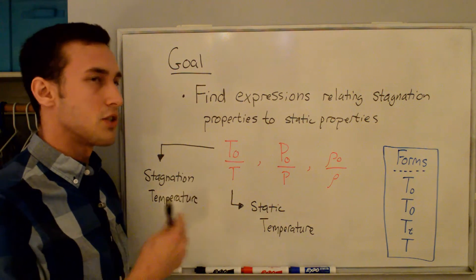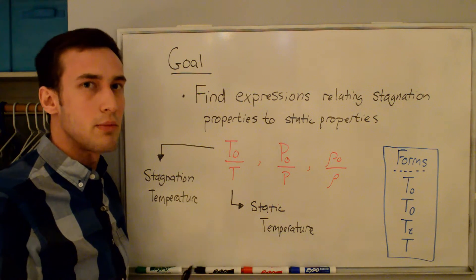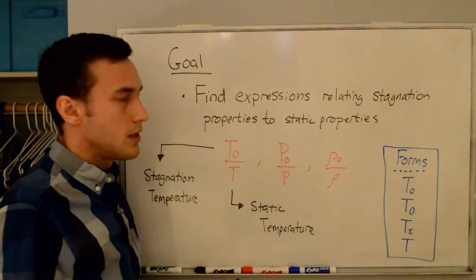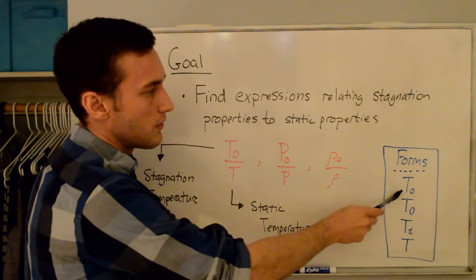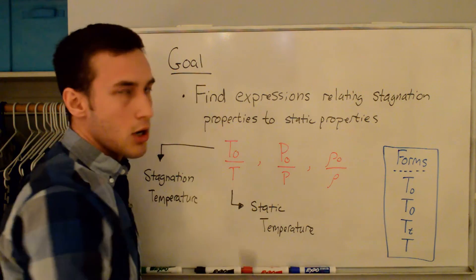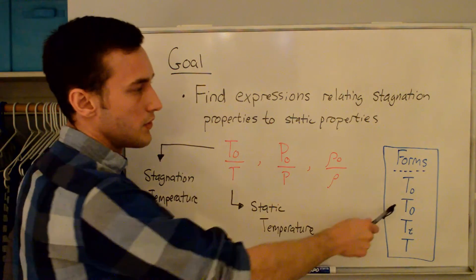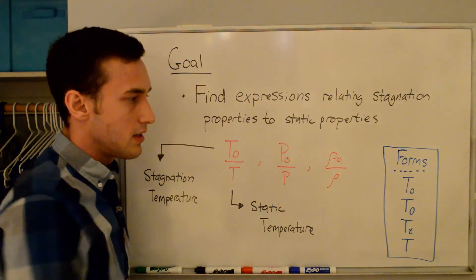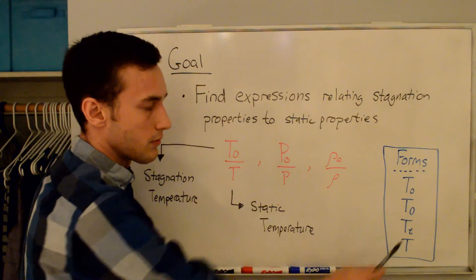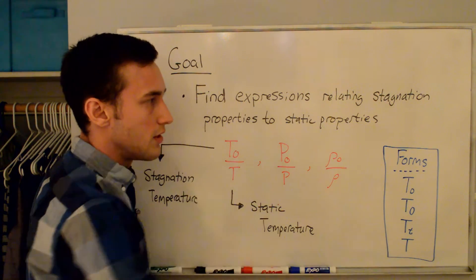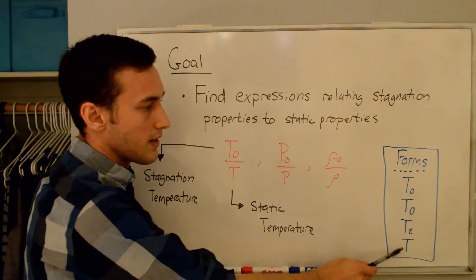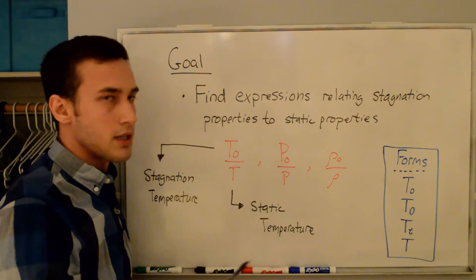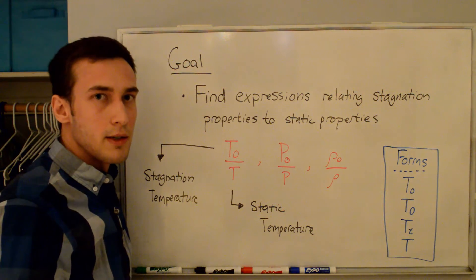So if I want the stagnation temperature, I say T0; stagnation pressure, P0, etc. Some different forms that you'll see in different books are shown here: T sub O, T sub 0, T sub lowercase t — where the t stands for total — and sometimes you'll even just see the total given as a capital T when the static temperature is given as a lowercase t.